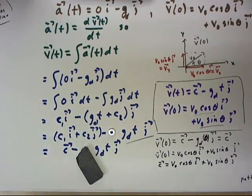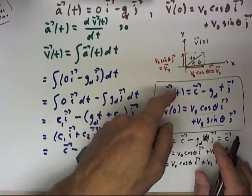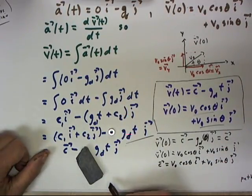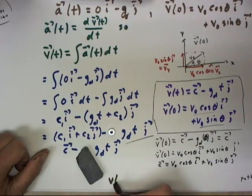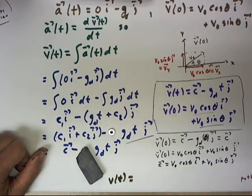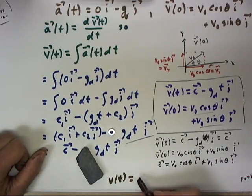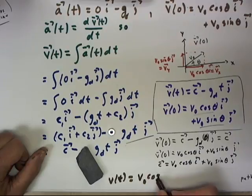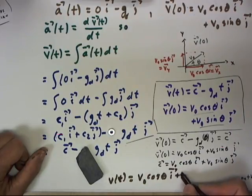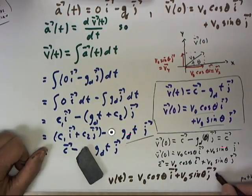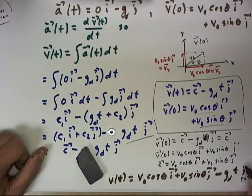And we conclude that our vector function describing the path of this object and its motion in time is v of t equals c, which is going to be v0 cosine theta i plus v0 sine theta j minus g sub d times t j.